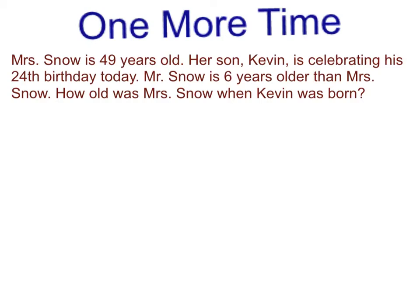Mrs. Snow is 49 years old. Her son, Kevin, is celebrating his 24th birthday today. Mr. Snow is 6 years older than Mrs. Snow. How old was Mrs. Snow when Kevin was born? This is one of those problems I was telling you about on the last slide where I told you that you wouldn't always have to use all of the numbers in these problems. So let's look and think about which numbers are really important. We need to know that Mrs. Snow is 49 years old. We do need to know that her son Kevin is 24. What we don't need to know, what doesn't matter to this question, is that Mr. Snow is 6 years older than Mrs. Snow. So we are going to totally ignore that number because it has no bearing in the problem at all.